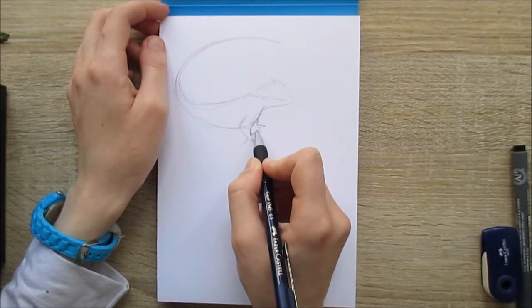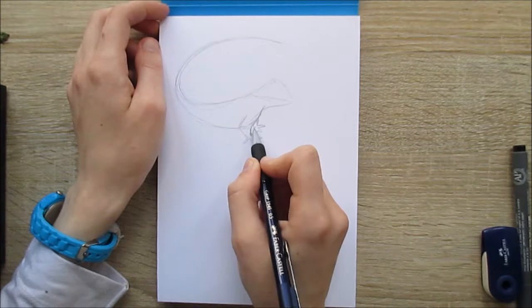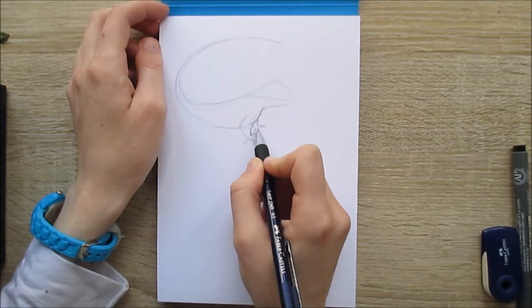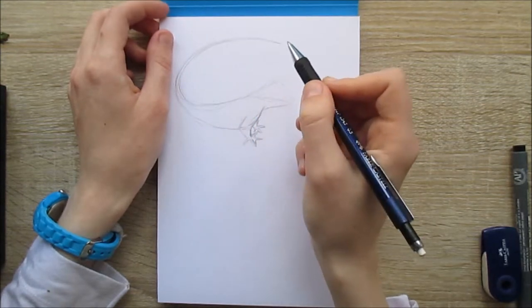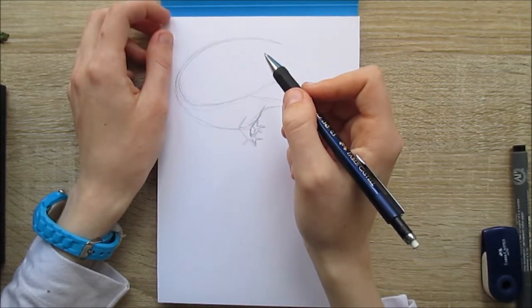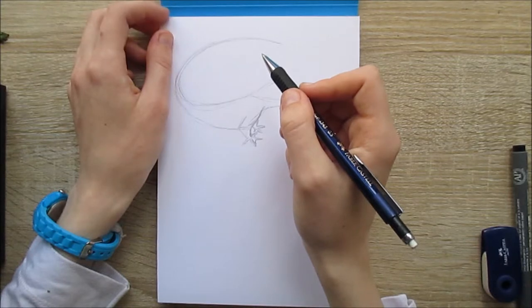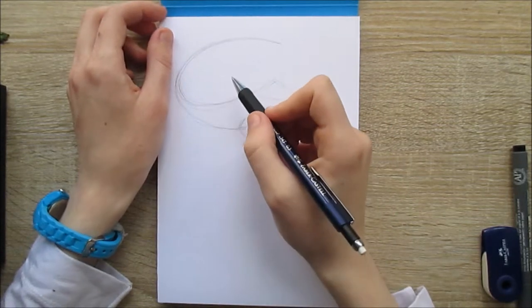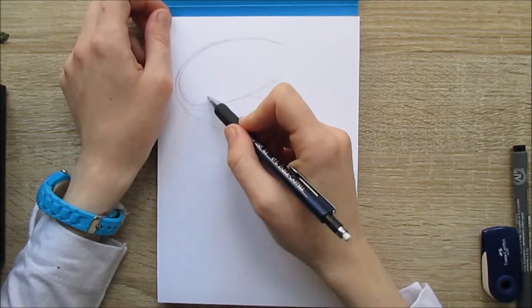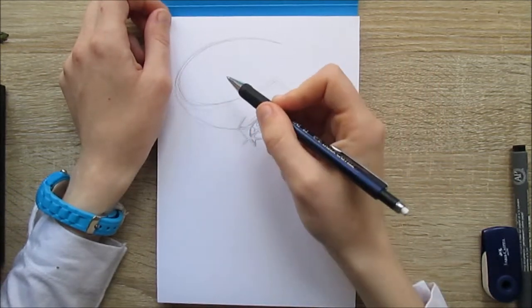So in January it was all about drawing faces, in February there were all kinds of different animals, March was all about ocean-themed stuff, April was... trying to remember what April was... colors, and now May is all about cartoon animals, cute cartoon animals.